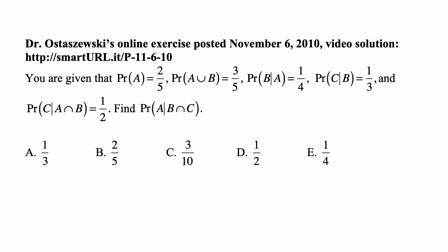Here's a problem for today, for exam P on probability. You are given that probability of A is two-fifths, probability of A union B is three-fifths, probability of B given A is one-fourth, probability of C given B is one-third, and probability of C given A intersection B is one-third. Find probability of A given B intersection C.